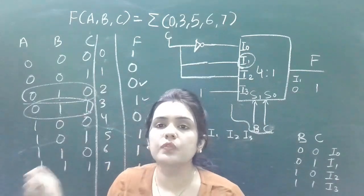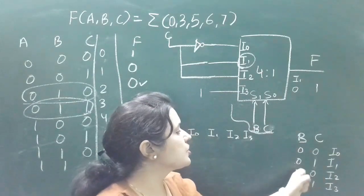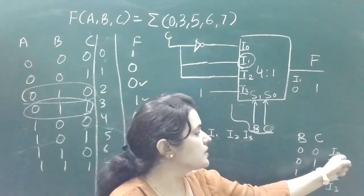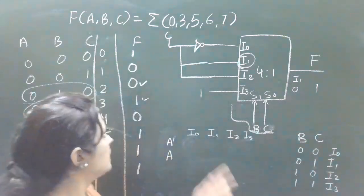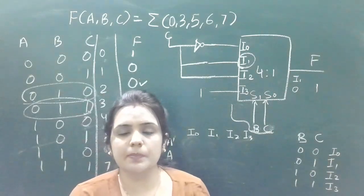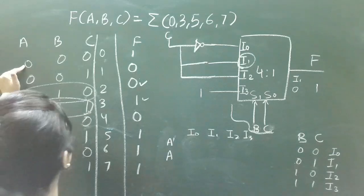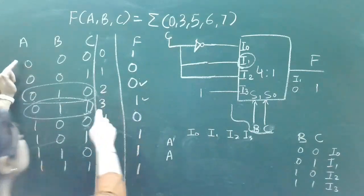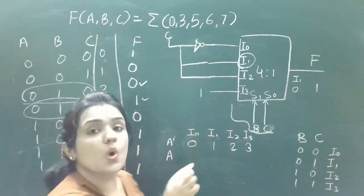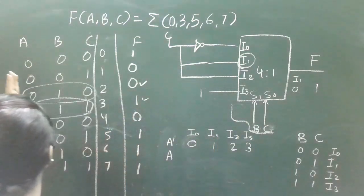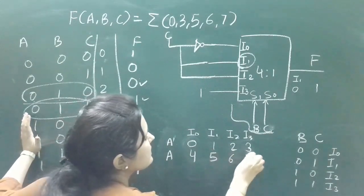With B and C as selection lines: the possible values of BC are 00, 01, 10, 11, selecting I0 through I3 respectively. A is the input. In the truth table, A is complemented for minterms 0, 1, 2, and 3, so write 0, 1, 2, 3 corresponding to A-complement. A is uncomplemented for minterms 4, 5, 6, and 7.